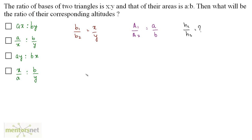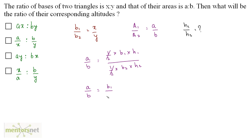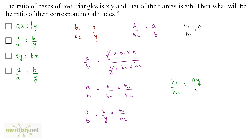We can write A1/A2 as A/B. Expanding: A1 = ½ × B1 × h1 and A2 = ½ × B2 × h2. The halves cancel out. So A/B = (B1/B2) × (h1/h2). Since B1/B2 = x/y, we have A/B = (x/y) × (h1/h2). Therefore h1/h2 = Ay/Bx.